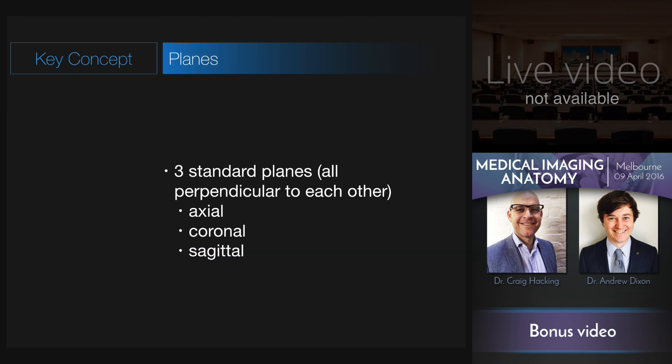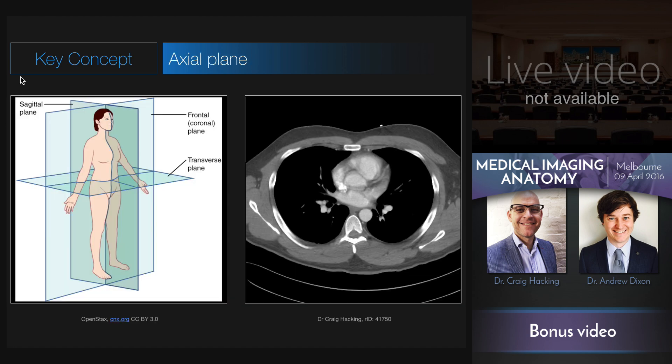We can define three standard planes, which are all perpendicular to each other, in reference to this anatomic position. The first, which is the most commonly used in cross-sectional imaging, is that of the axial or transverse plane, sometimes called the transaxial plane. As you can see, it's perpendicular to the long axis of the body, and we routinely view these images as if we were at the patient's feet, looking up towards the head.